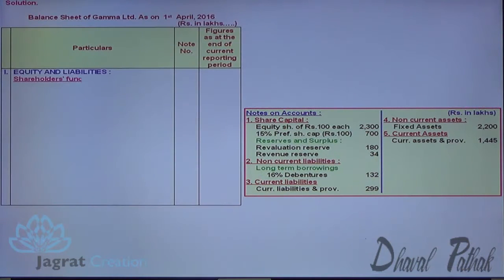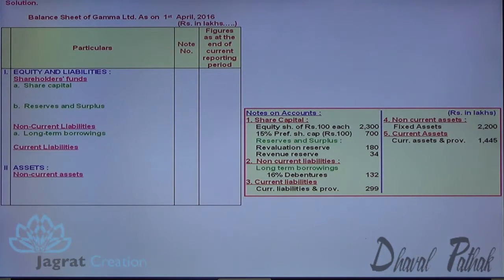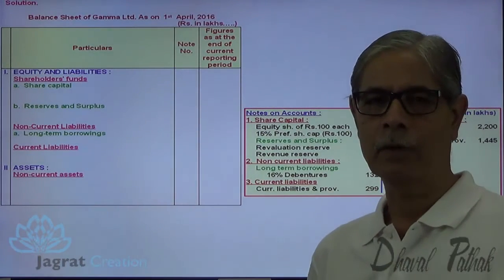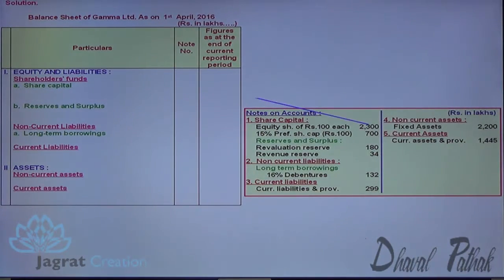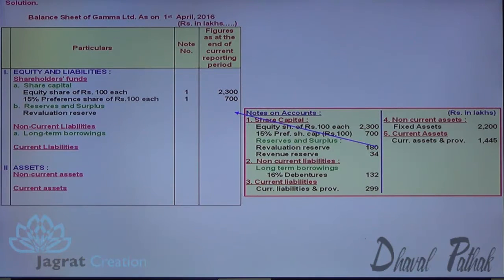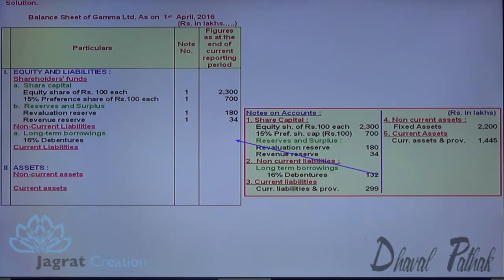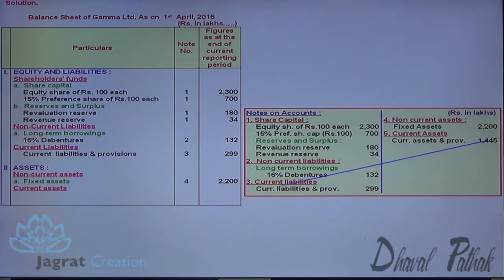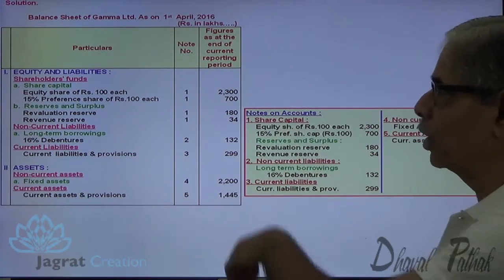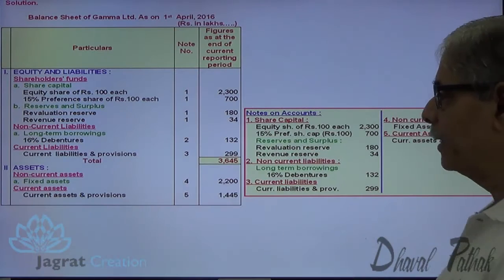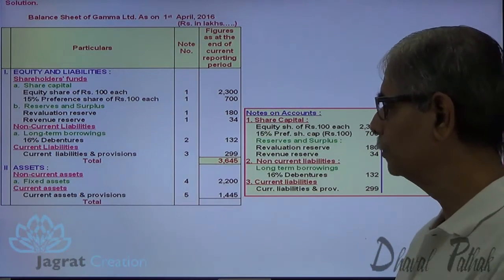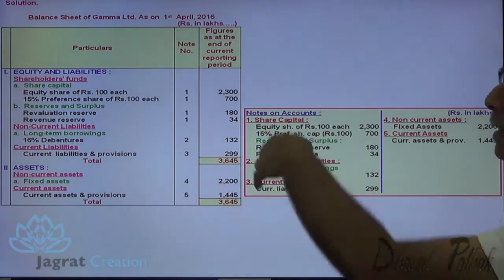Now I prepare the balance sheet as per Schedule III. Equity share capital at ₹100 each, preference share capital at ₹100 each, revaluation reserve (or profit and loss account instead of revenue reserve), long-term borrowings — 16% debentures, current liabilities and provisions, fixed assets under non-current assets, current assets. Total equity and liabilities equals total assets: ₹3645 lakhs. This is how the balance sheet is prepared under amalgamation in the nature of merger.